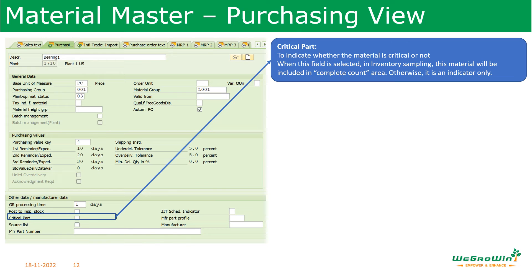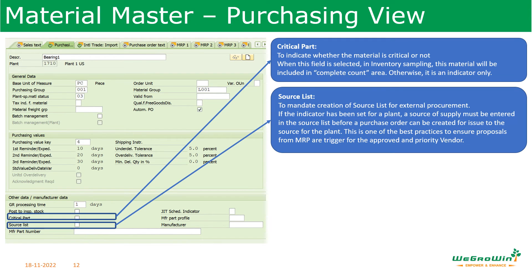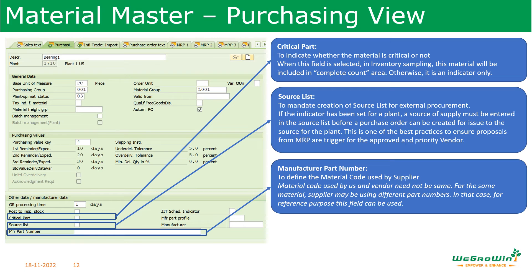Critical part is a field to mark that the material is critical. It does not activate any function — it is used in inventory counting just as an indicator. Source list is used to mandate the creation of a source list for external procurement. If this indicator has been set in the plant, the source list must be entered. This is a good practice because it triggers the system to select the right or approved supplier, even if the material has two or three suppliers defined in the source list. Manufacturer part number is used to define the manufacturing code used by the supplier, because the material code used by us and the code used by the supplier need not be the same.